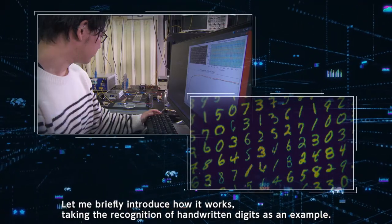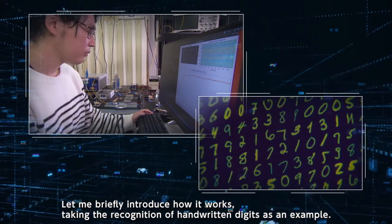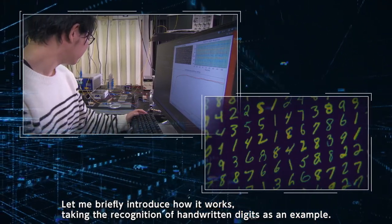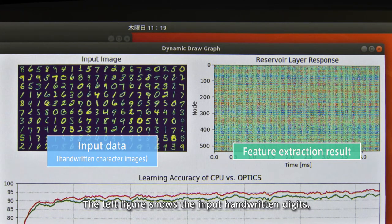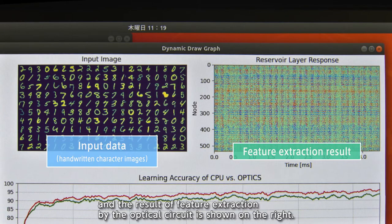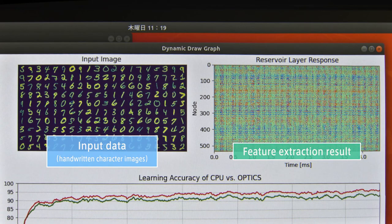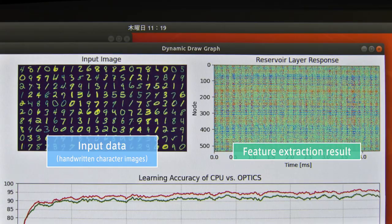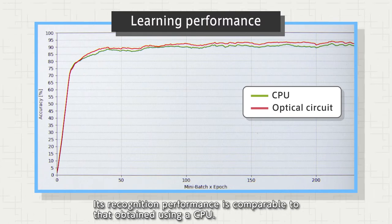Let me briefly introduce how it works, taking the recognition of handwritten digits as an example. The left figure shows the input handwritten digits, and the result of feature extraction by the optical circuit is shown on the right. Its recognition performance is comparable to that obtained using a CPU.